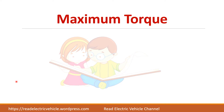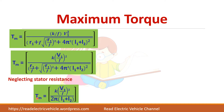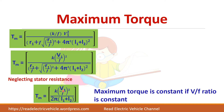Simplifying and neglecting stator resistance, the maximum torque equation becomes: T_max = K × (V1/F)² / (2π × (L1 + L2)). Since all remaining terms are constant, maximum torque is directly proportional to (V1/F)². So if the V by F ratio is kept constant, the maximum torque remains constant — this is the key advantage of V by F control.